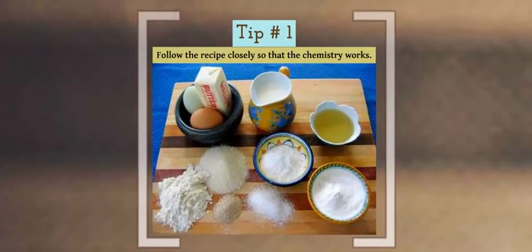Baking a cake involves a lot of chemistry, so the number one tip is to follow the recipe closely so that the chemistry works. The order you add the ingredients, how you add them, and the way and time you mix them are all important.